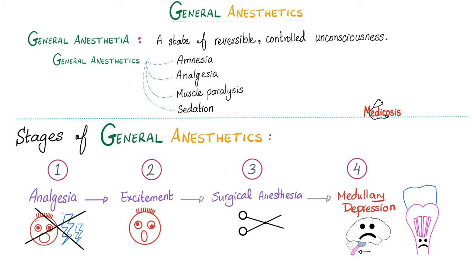General anesthetics — what are we trying to accomplish? A state of reversible, controlled unconsciousness. How do you achieve it? Amnesia, analgesia, muscle paralysis, and sedation. Amnesia means memory loss. Analgesia means no pain. Muscle paralysis is achieved by a neuromuscular blocker, and sedation means calm down.